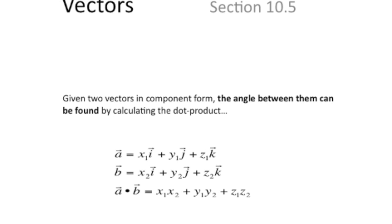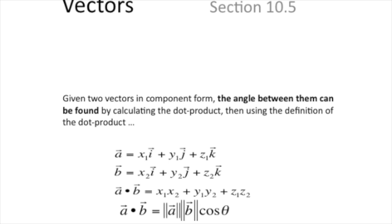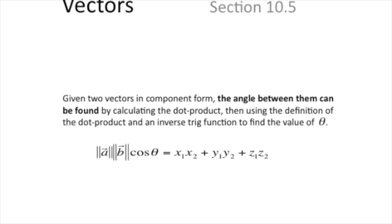The same exact thing happens with dot products. If you have two vectors in component form, you have a method for finding the dot product by multiplying the coefficients together and adding them up. You also have the definition of the dot product. So if you know what the dot product is, you can take the dot product calculated one way, make it equal to the dot product calculated the other way with the angle as your variable, and then solve for the angle.